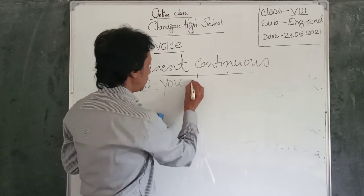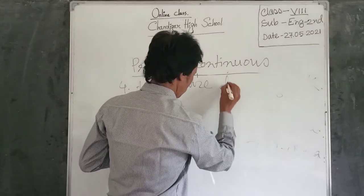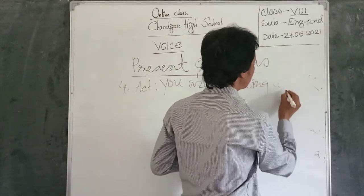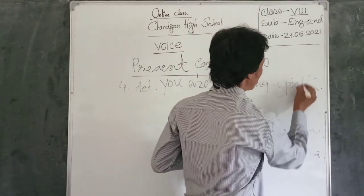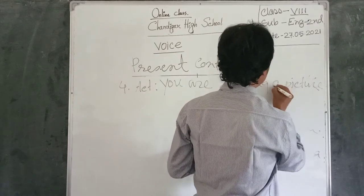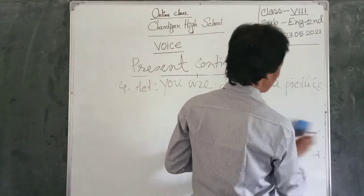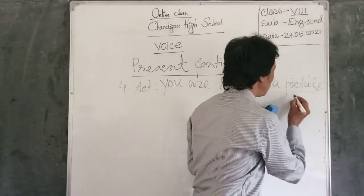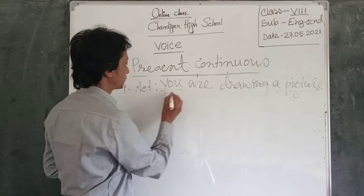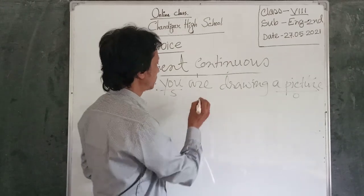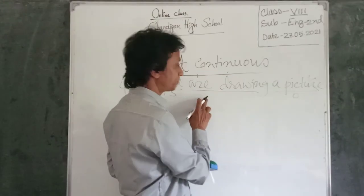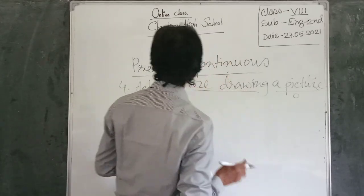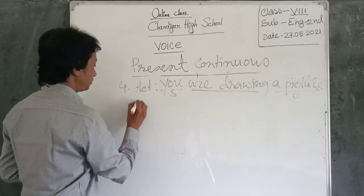Example four: 'You are drawing a picture.' Here 'a picture' is the object, becoming the subject. It is present continuous tense, so we use 'is being' plus past participle 'drawn.' Passive: 'A picture is being drawn by you.'